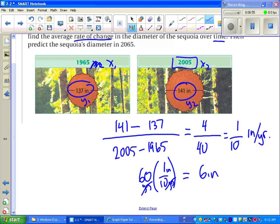Which means my new diameter would be six inches bigger than it was in 2005. So 141 plus six is 147 inches. Done.